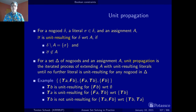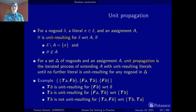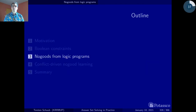Now that we have looked at the basic ingredients — abstracted from where no-goods come from — let's look exactly at this problem: how can we actually get no-goods from logic programs?